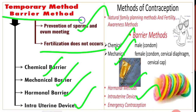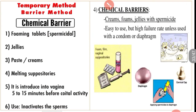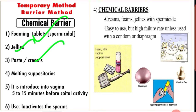Let's start with chemical barrier, also called the chemical method. These are contraceptives which contain spermicidal chemicals. They are available in the form of foaming tablets, jellies, paste, creams, and melting suppositories. These commonly contain lactic acid, boric acid, citric acid, zinc sulfate, and potassium permanganate.